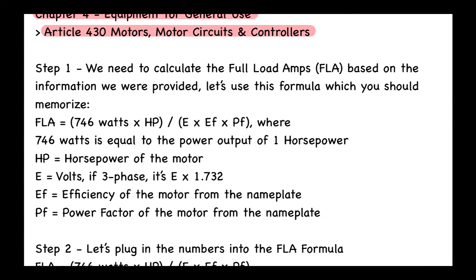Step number one: we need to calculate the full load amps, the FLA, based on the information we were provided. Let's use this formula which you should memorize. FLA is equal to 746 watts times the horsepower of that motor, then we divide that by the voltage times the efficiency times the power factor, where 746 watts is equal to the power output of one horsepower.